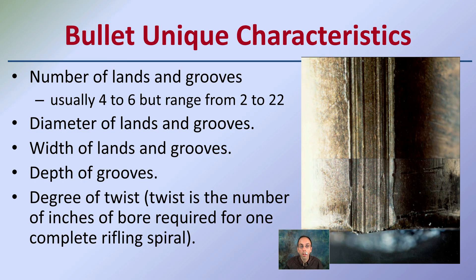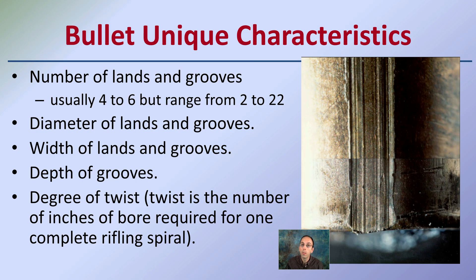These unique characteristics include the number of lands and grooves — usually four to six, but ranging from two to 22 — the diameter of the lands and grooves, the width and depth of the lands, and the degree of twist. The twist is the number of inches the bore requires to complete a rifling spiral. You want to compare a known sample against what was found at the crime scene. This matching is typically done with a comparison microscope because it requires fine detail, helping identify or match the fingerprint of the gun or barrel to the particular bullet found at the crime scene.